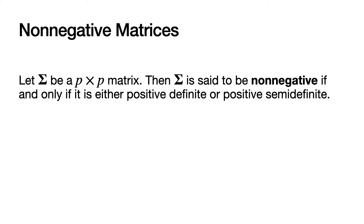And then finally, let's define non-negative matrices. Again, let CAP-SIG be a P by P square matrix. Then CAP-SIG is said to be non-negative if and only if it is either positive definite or positive semi-definite.